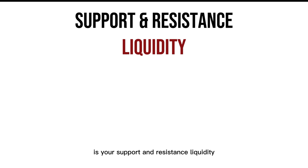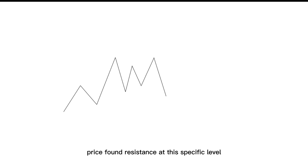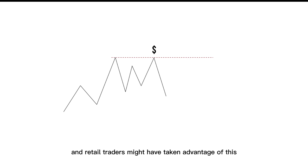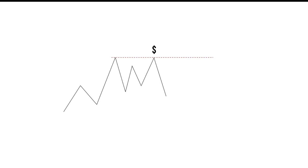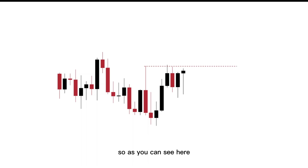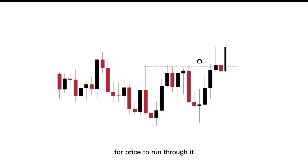So let's get into this. The first type of liquidity we're going to cover is support and resistance liquidity, which is your equal highs and equal lows. As you can see, price found resistance at this specific level. That means institutions sold at this level and retail traders might have taken advantage of this. So now this level is incentivized to attract price — it will act as a magnet for price to later run over this level. Price is finding resistance, and this level will be used as a magnet for price to run through it.